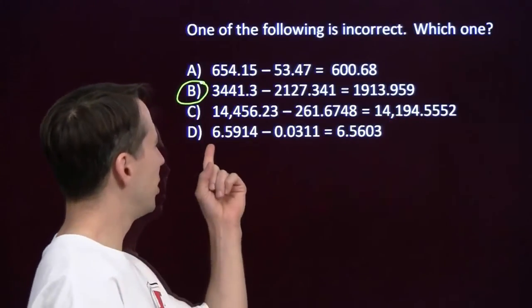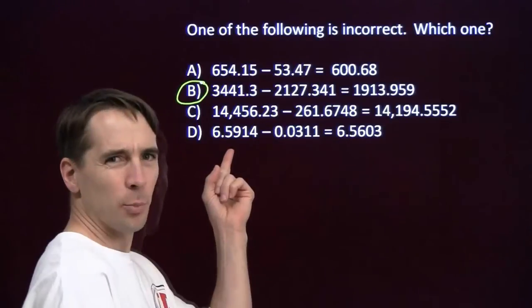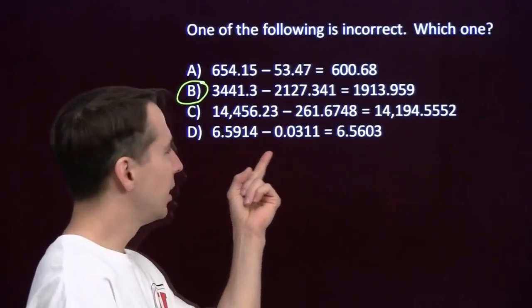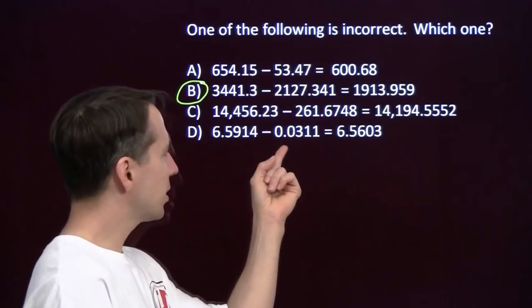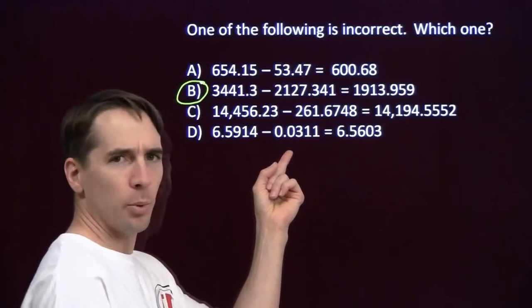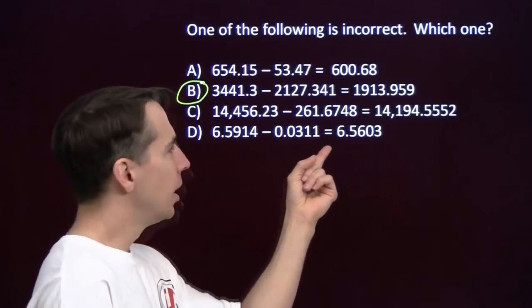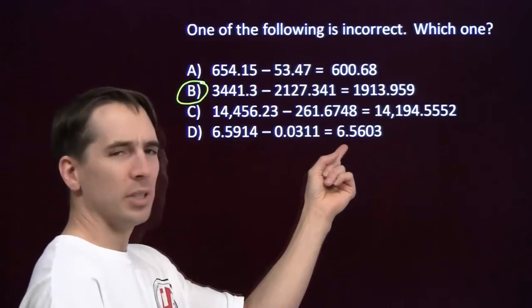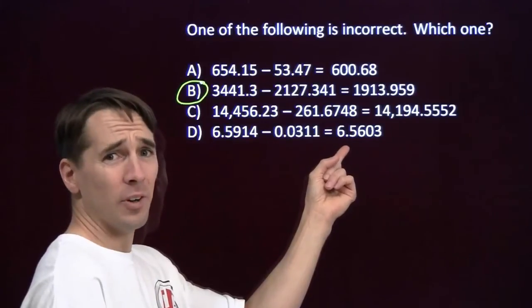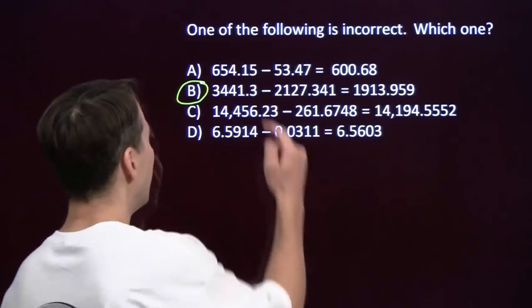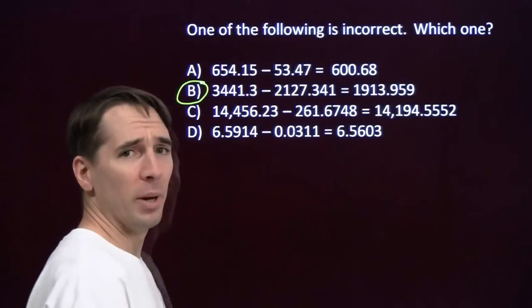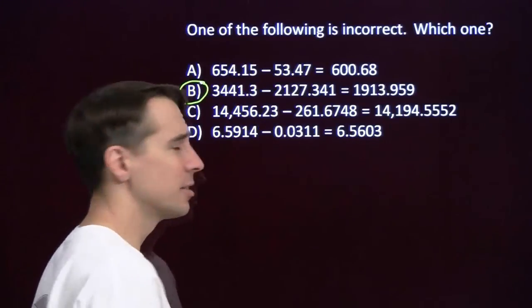On to my last subtraction: I've got a number that's real close to 6.59, and I'm subtracting something that's close to .03. I should get something that's about 6.56. B is the one my calculator missed.